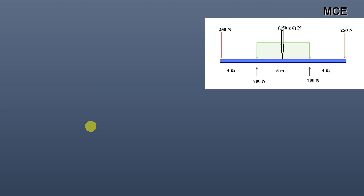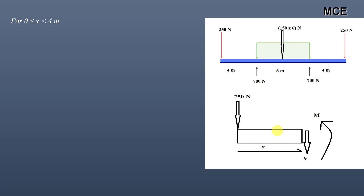We divide this beam into three parts: the first part is from 0 to 4 meters, the next part from 4 to 10 meters, and the last part from 10 to 14 meters. For the first part, where x is greater than or equal to 0 and less than 4 meters, we take the cut somewhere between x equals 0 to 4 meters. You can see the free body diagram for this portion.